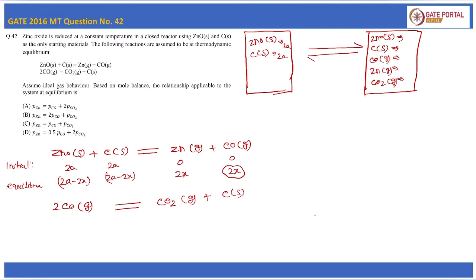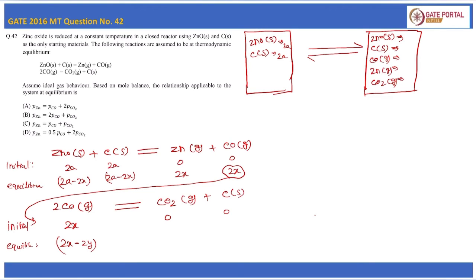This 2x moles of CO will act as a reactant for the second reaction. For reaction 2, the initial condition is 2x moles of CO, zero moles of CO₂, and zero moles of carbon. At equilibrium, let 2y moles of CO dissociate, giving rise to y moles of CO₂ and y moles of carbon in solid form, since the ratio is 2:1.